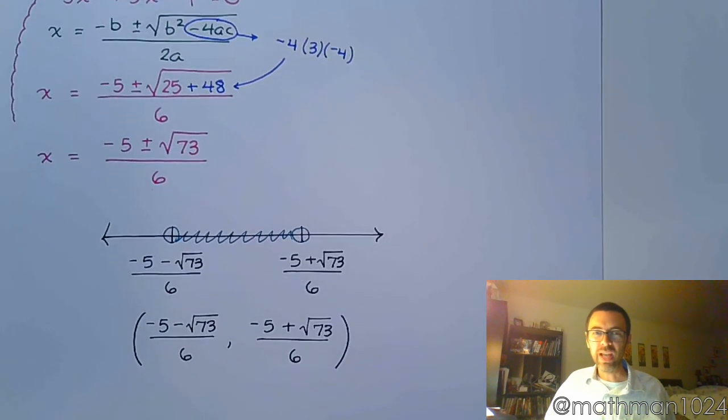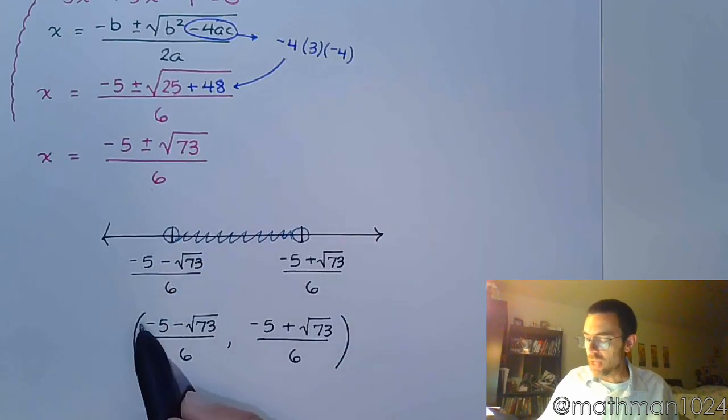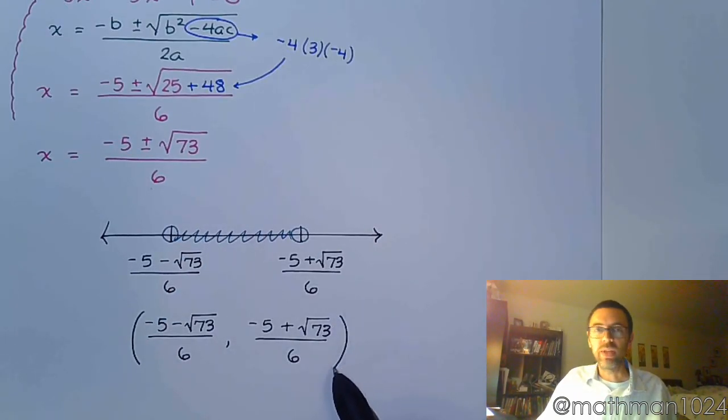Again, I know this is an ugly looking answer, but that's what it is. If the inequality had been changed from less than to be less than or equal to, the or equal to part would mean that you would include those endpoints, and you would then have brackets on the ends.